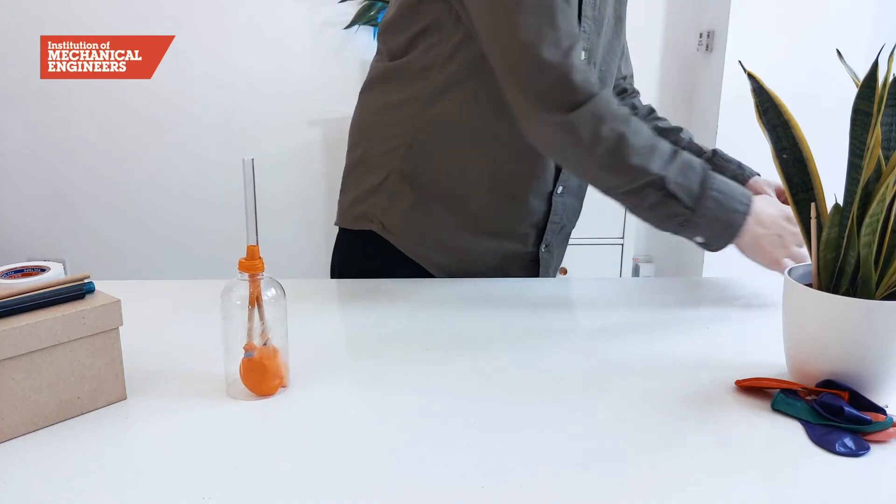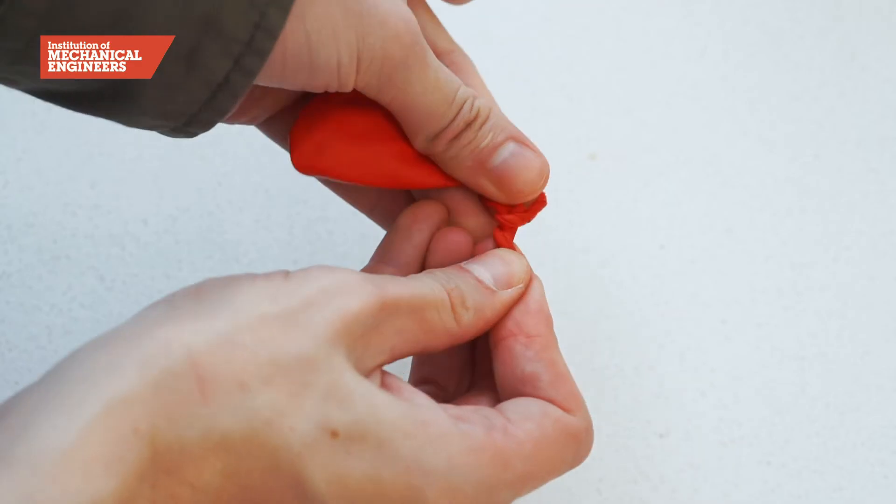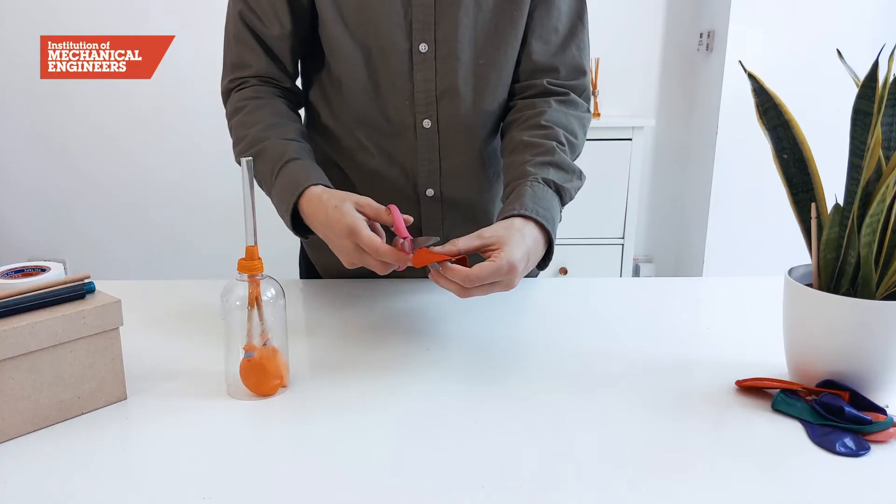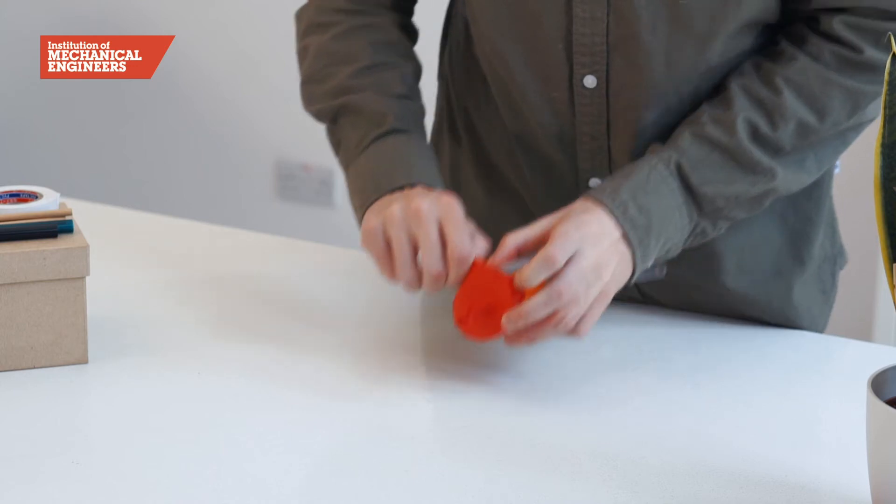To complete the lung model we will add a diaphragm. For this we need another balloon which we tie a knot in and cut across the middle. Then tightly stretch the balloon over the end of the bottle.